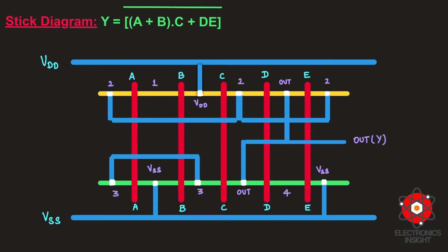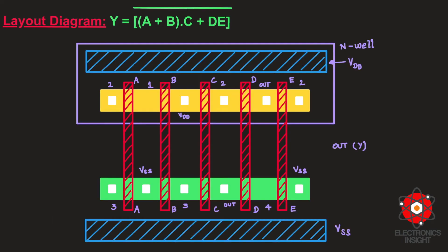The first part of the layout diagram video is also provided in the description box below. I have started with the stick diagram because the general layout guidelines are much similar to the stick diagram guidelines. With this understanding of how to draw a stick diagram for a given boolean logic function, we are going to differentiate the layout diagram using a set of rectangles.